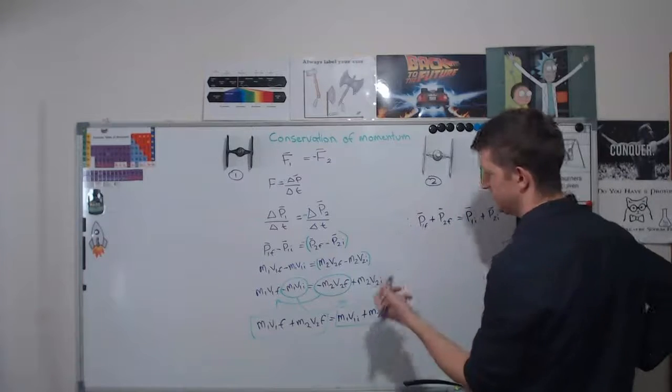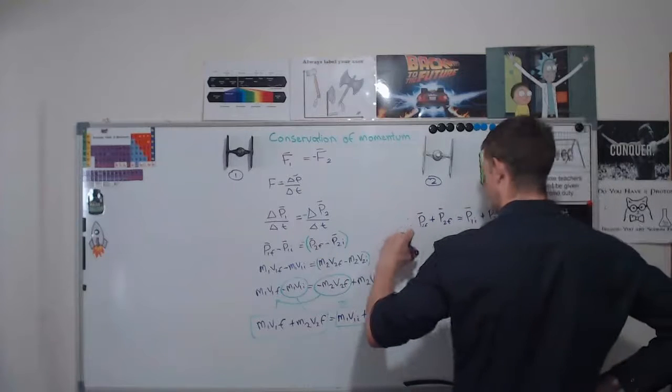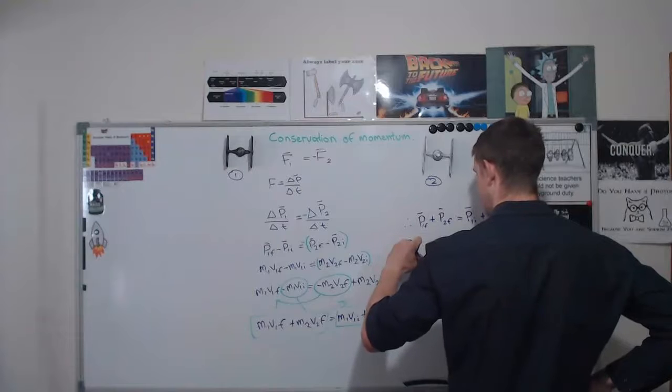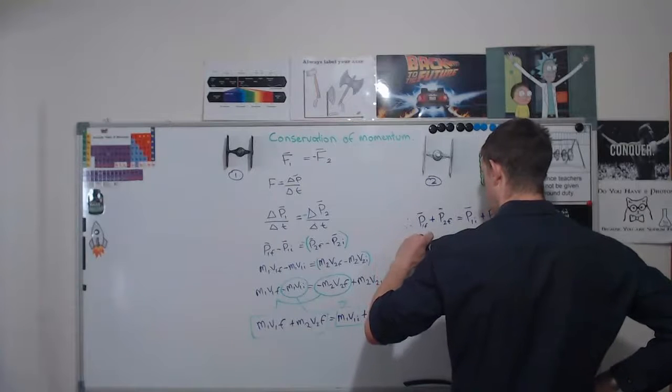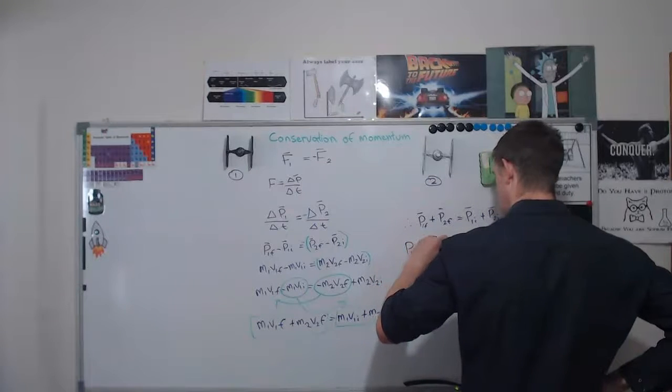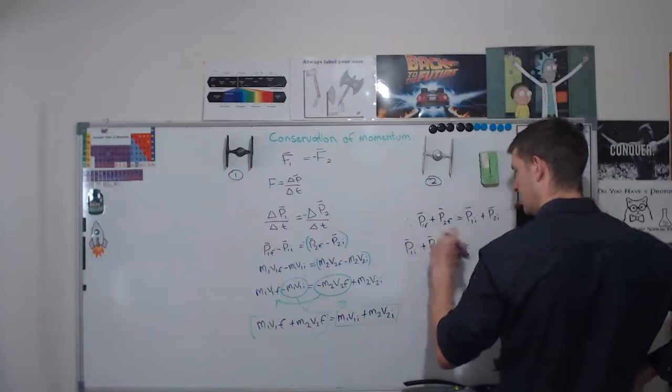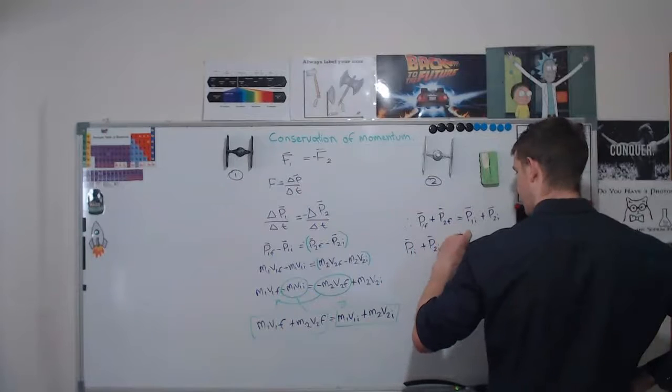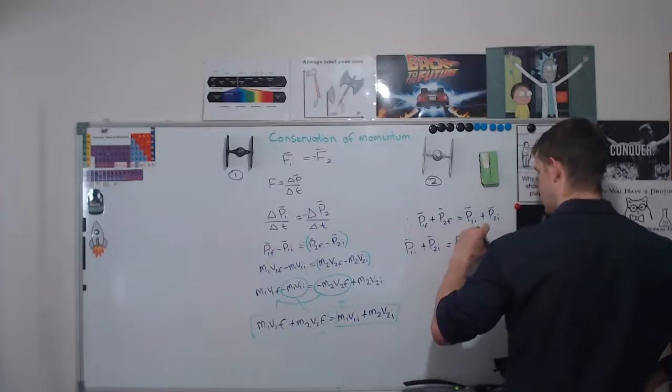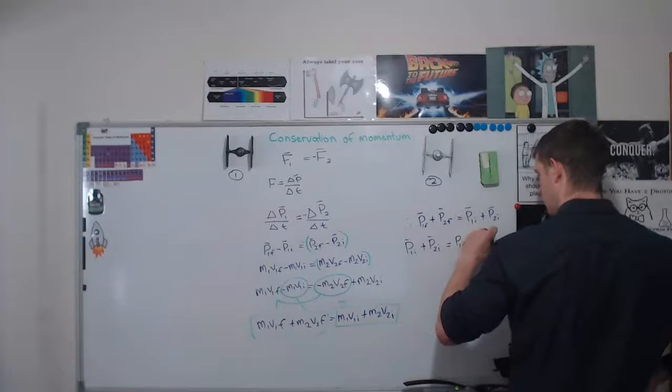And if I flip that around just so it's more intuitive, it makes a bit more sense. That says that the initial momentum of 1 plus the initial momentum of 2 is equal to the final momentum of 1 plus the final momentum of 2.